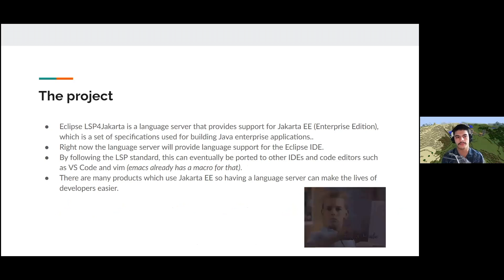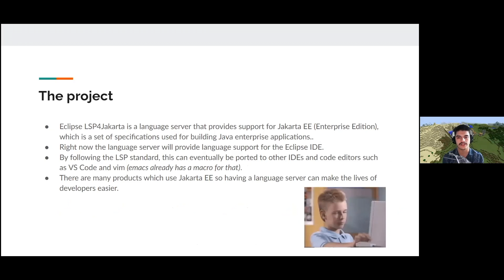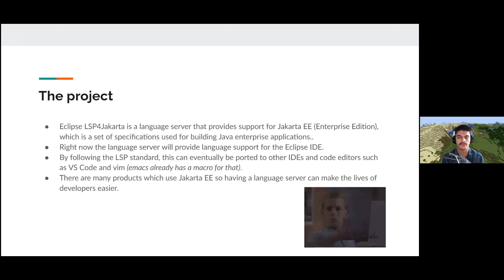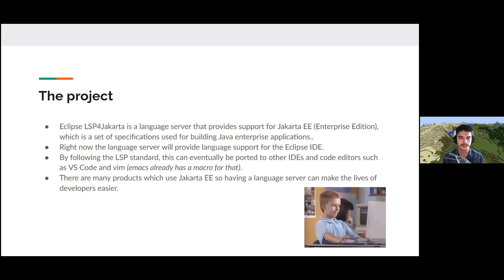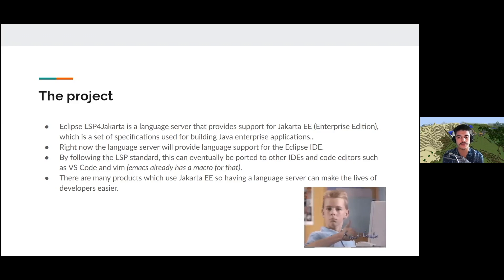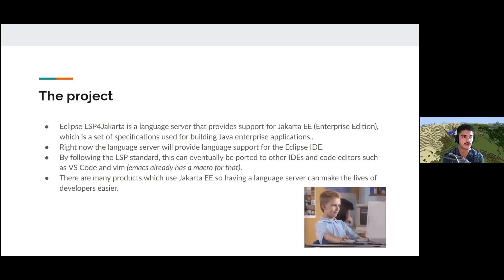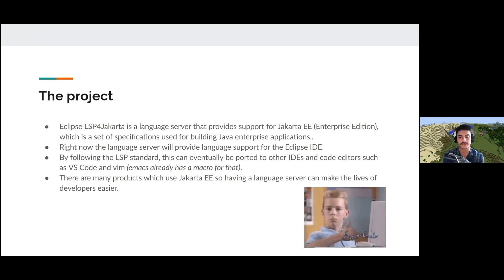The project is a language server that provides support for Jakarta EE, the Enterprise Edition, which is a set of specifications used for building Java Enterprise applications. Right now the language server will provide support for the Eclipse IDE — hence the Eclipse in the name — but because we follow the LSP standard, it could eventually be ported to other IDEs and code editors like VS Code and Vim. There are many products that use Jakarta EE, so having a language server can make developers' lives easier by enabling faster development and fewer errors.